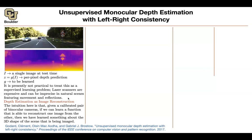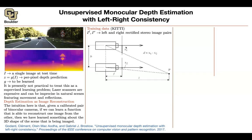During training you're allowed to work with two images; during testing you have only one image. Your training data is going to be KITTI — you'll have a left image and a right image from a left and right camera. Intuitively, I want you to take your thumb, look at it, and then close your left and right eye alternately while looking at your thumb. It will give you two images with some disparity between them, giving you an intuitive feeling of what we are trying to do.